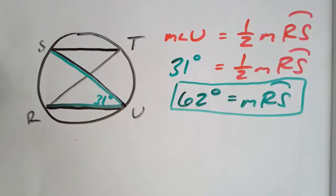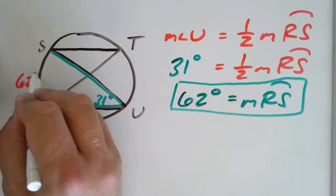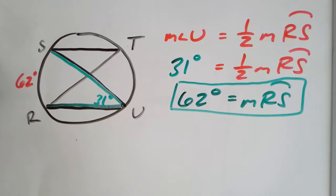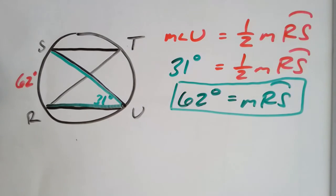So again, the computation isn't terribly difficult here. And so to write it in a different color here, arc RS to show how it would be written on a diagram outside of the circle, outside of that arc, arc RS is 62 degrees. Great.